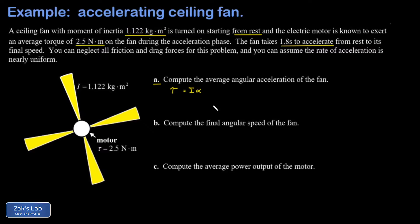We solve for the angular acceleration and plug things in. The torque exerted by the motor is 2.5 newton meters, the moment of inertia is 1.122 kilogram meters squared, and to three significant figures we get an angular acceleration of 2.23 radians per second squared.